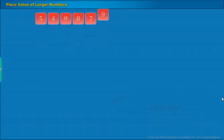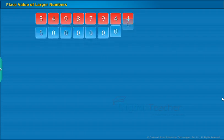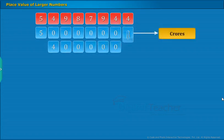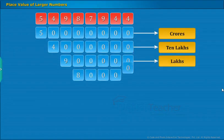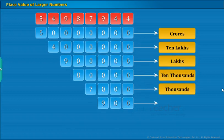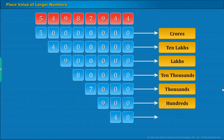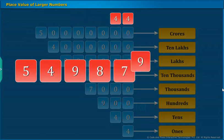Place value of larger numbers: Let us now see the places of larger values. Here is the number 54987944. Let us see how it is placed with their place values. 5 is in crores place, 4 is in 10 lakhs place, 9 is in lakhs place, 8 is in 10,000's place, 7 is in 1,000's place, 9 is in 100's place, 4 is in 10's place, and 4 is in 1's place. Now, it can be read as 5 crores 49,087,944.